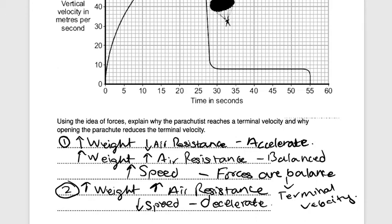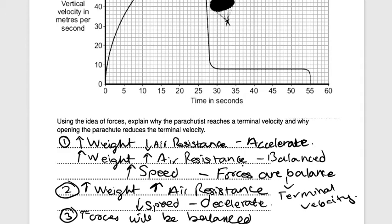Once the skydiver has been decelerating for a while and comes close to the ground, the air resistance will decrease and the weight stays the same, so the forces become balanced once more. This means the skydiver reaches a new, lower terminal velocity. We've explained why the parachutist reaches terminal velocity and why opening the parachute reduces it — that would be a six-mark answer. You would also note that the forces are balanced and a new terminal velocity is reached.